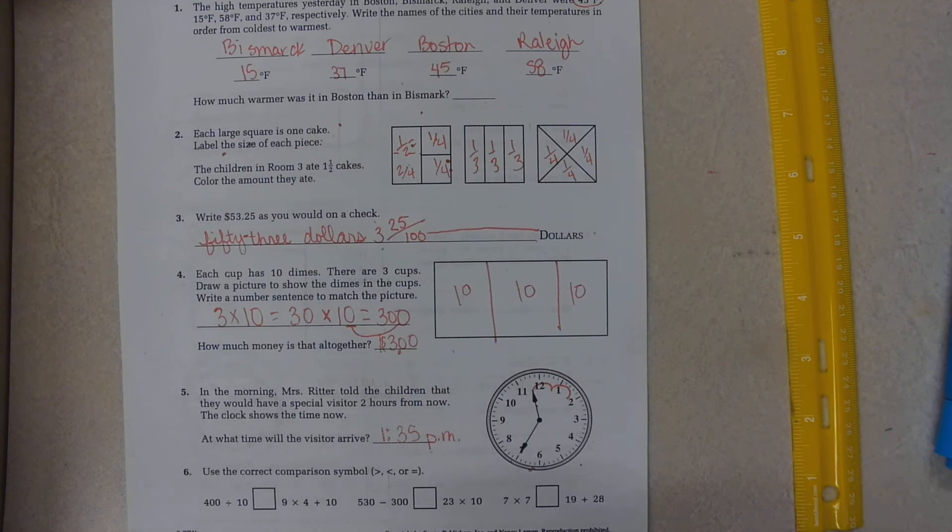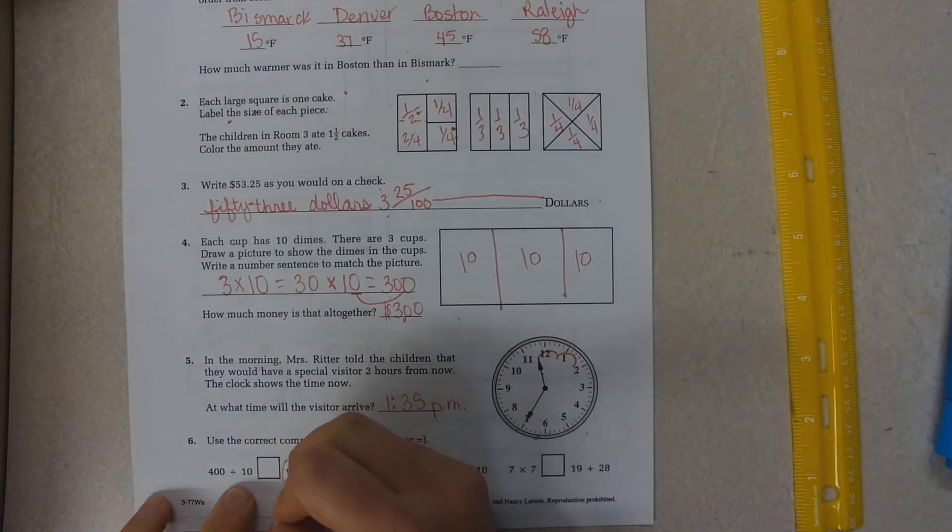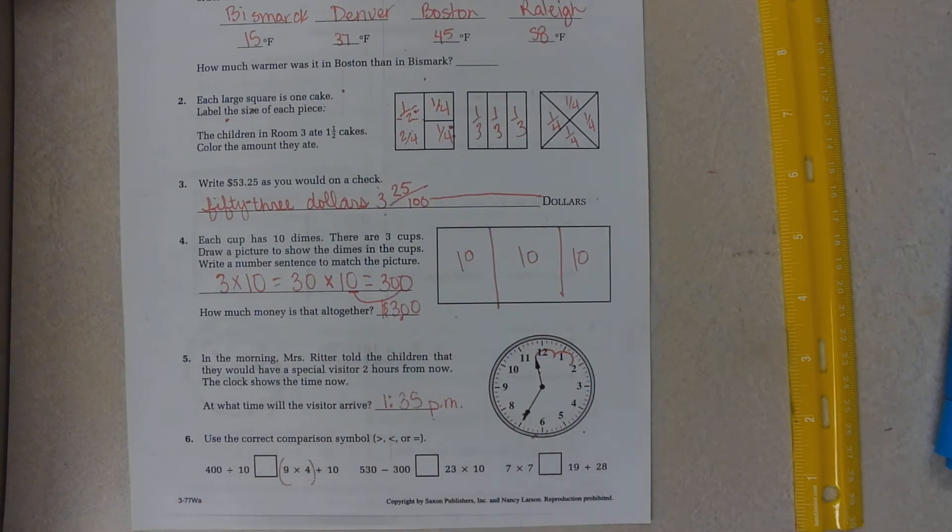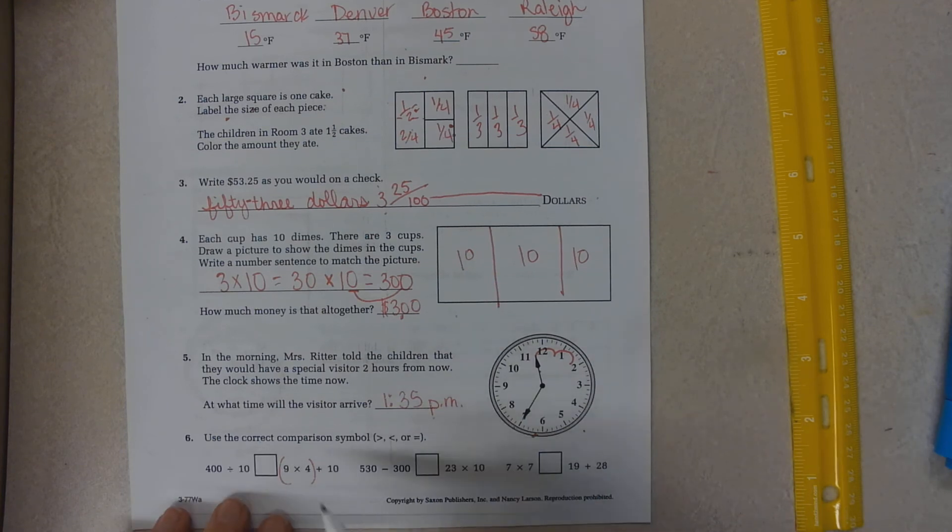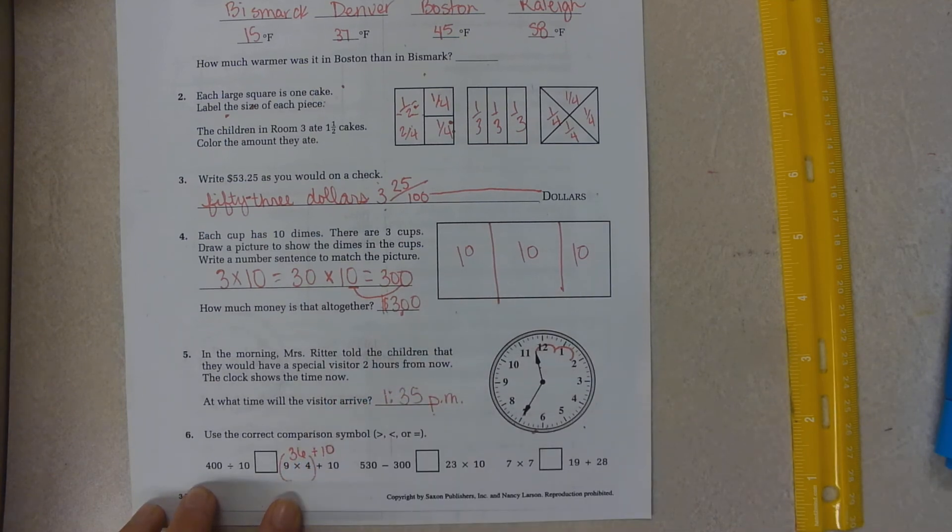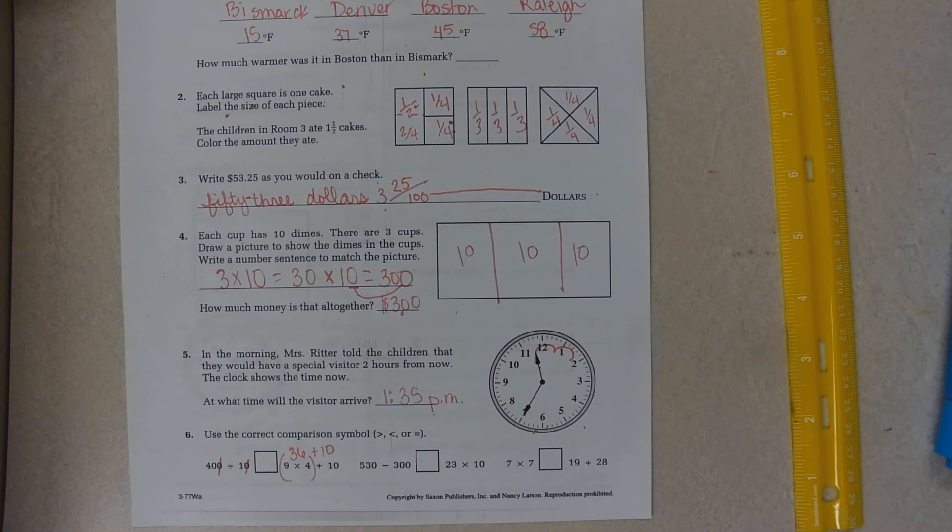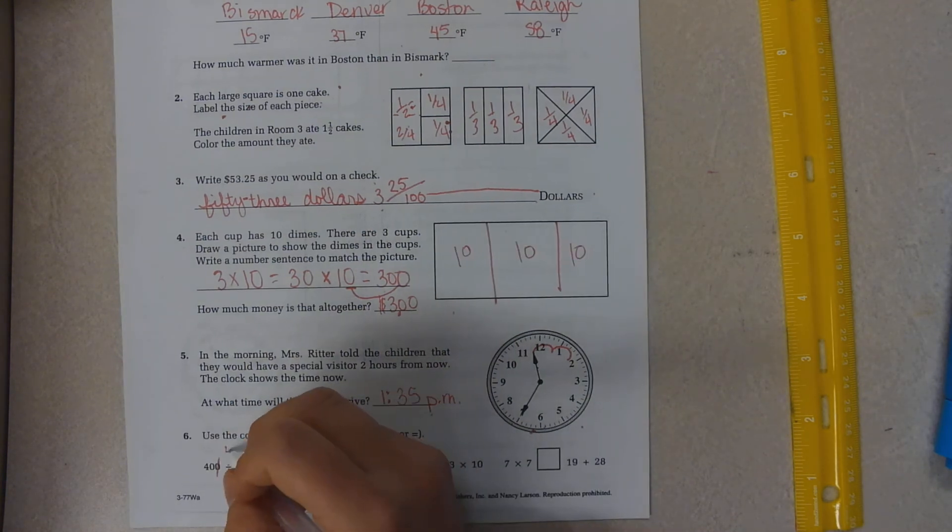You can do the bottom on your own. Just remember that you always do your multiplication and division before you add and subtract. So, on this one, you would do nine times four is thirty-six plus ten. Here, you would go four hundred divided by ten. I can count by tens to four hundred. Or, I can just imagine, like what we do with multiplication, and just eliminate those zeros. Forty divided by one is forty.